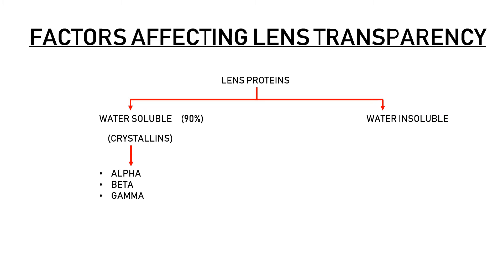Beta crystallins have the highest concentration in the lens at about 54%, followed by alpha crystallins at about 32%, and gamma crystallins are least abundant at about 1.5%. Alpha crystallins are the largest of the three in size. Lens proteins are densely packed together, and this arrangement is not only responsible for the refractive index of the lens but also for its optical properties.